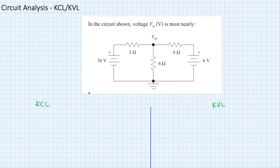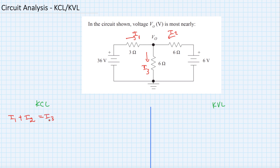KCL is a current law. The law says that current entering a node equals the current leaving the node. So if you consider this node and we have currents i1 and i2 entering and i3 leaving, then i1 plus i2 equals i3. You could also choose differently which ones enter or leave the node — it doesn't really matter as long as you follow the rule that entering equals leaving.